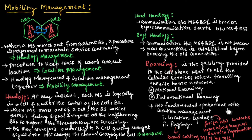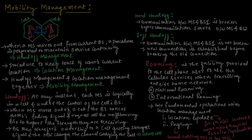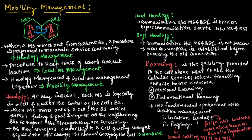There are two fundamental operations associated with location management during roaming. The first is location update, where the foreign network contacts the home network and requests service information, and the home directory of the mobile station is updated with the current location. The second is paging, where the mobile identification number is broadcasted by the mobile switching center. This covers mobility management, handoff, and roaming. Hope you have understood the topic. Thank you.